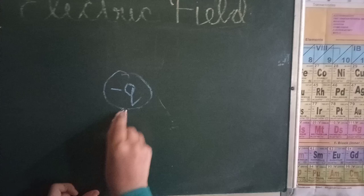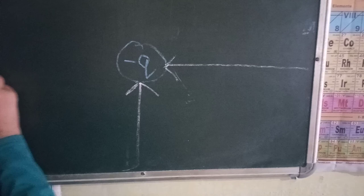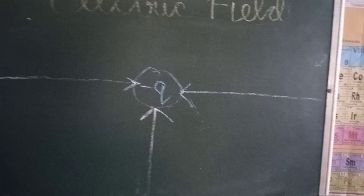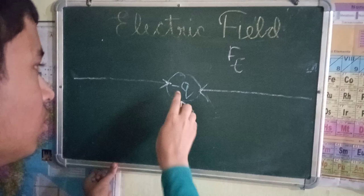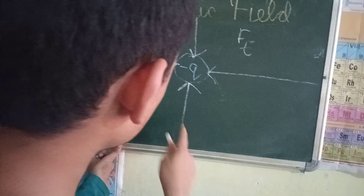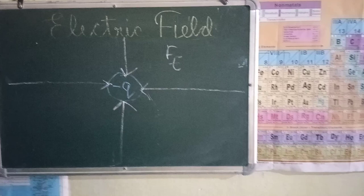Now what will be the direction of electric field for a negative charge? The electric field of a negative charge will be towards the center of the charge. Why? Because the electrostatic force always acts toward the charge in the case of a negative charge, so the electric field will be towards the center of the charge.